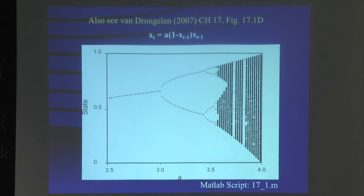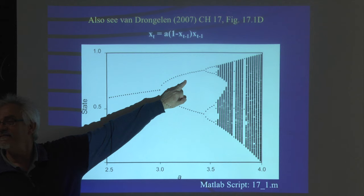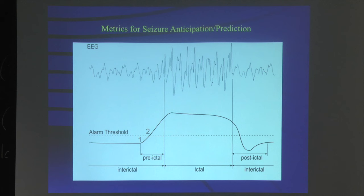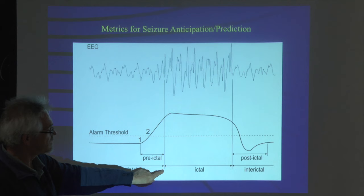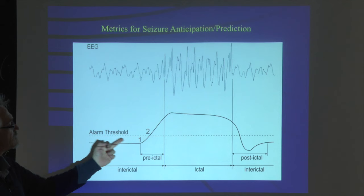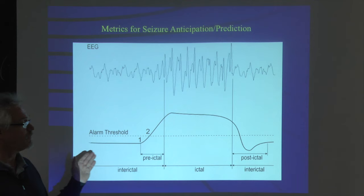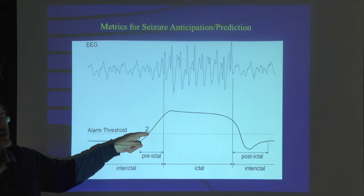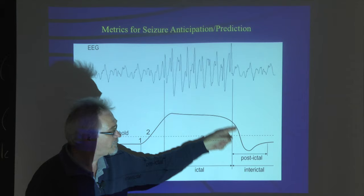If you are in the simple deterministic region, you can predict. The closer you get to the chaotic region, the more difficult it's going to be to predict. Getting back to the idea of predicting a seizure: we would like to extract something from the signal that gives us a warning — crossing some kind of threshold — before the seizure really starts. This is our wish list: something that says 'something is going to happen,' and when it does, it's there, and afterwards that parameter goes back to baseline.